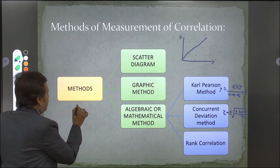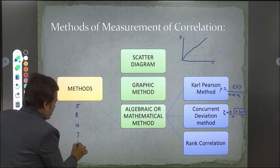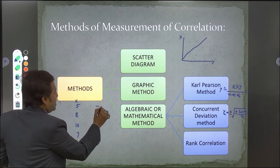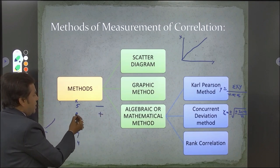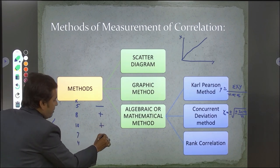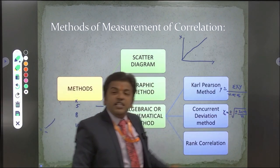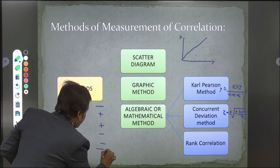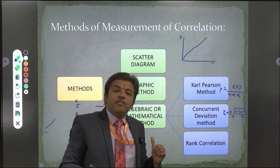For example, with X series values 5, 8, 10, 7, 4: the first term has no preceding term so we leave it blank. 8 is more than 5, so we write plus. 10 is more than 8, so we write plus. 7 is less than 10, so we write minus. 4 is less than 7, so we write minus. So C — the count of positive signs — is equal to 2 for these 5 terms. We calculate the Y series signs similarly.